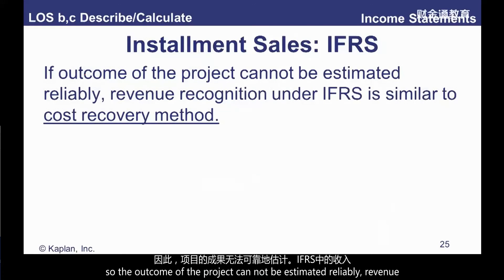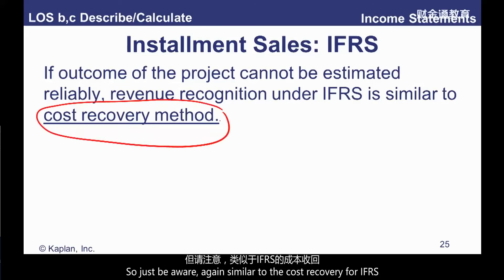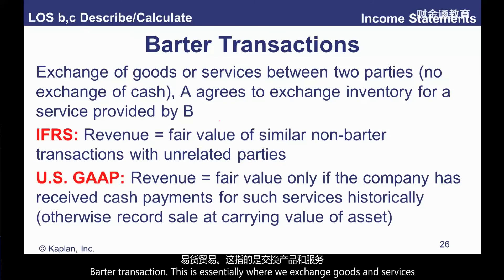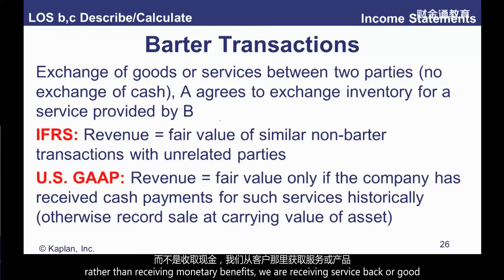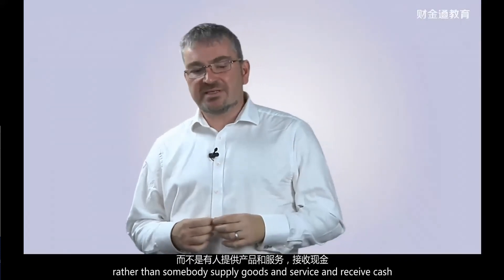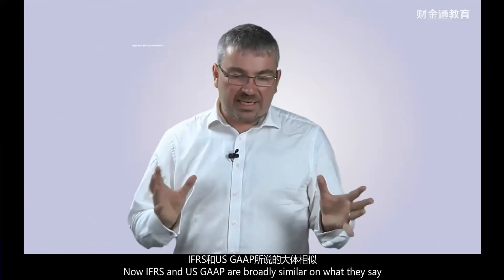In summary: sales basis records all profit at time of sale; instalment method records revenue as cash is collected and shows profit in proportion to cash received; cost recovery method records revenue as cash is collected but shows no profit until all costs are fully recovered. If the outcome of a project cannot be estimated reliably, IFRS recognition is very similar to the cost recovery method.